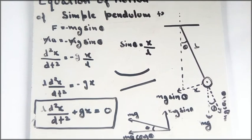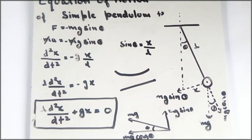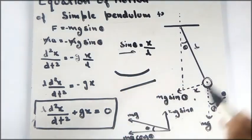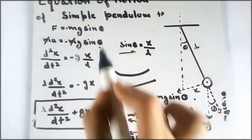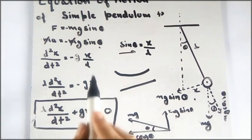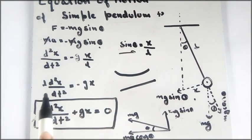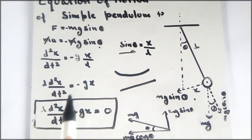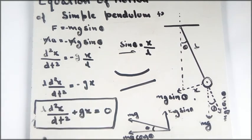This equation of motion is valid only for small oscillations. For large oscillations, applying this equation will introduce some percentage error. For small oscillations we use the arc formula: sinθ ≈ x/l. Substituting into the equation gives l·d²x/dt² = −gx, which rearranges to l·d²x/dt² + gx = 0.